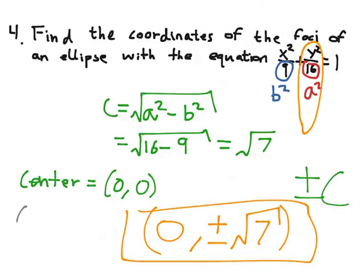And this could also be written separately as 0 minus the square root of 7 and 0 positive square root of 7.